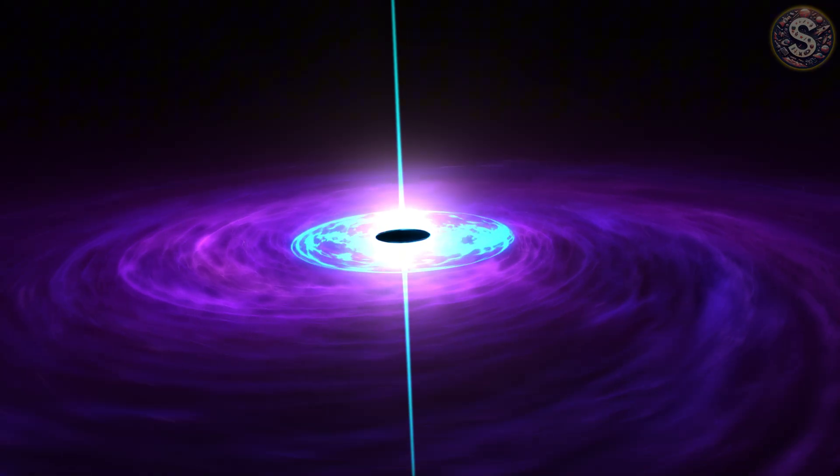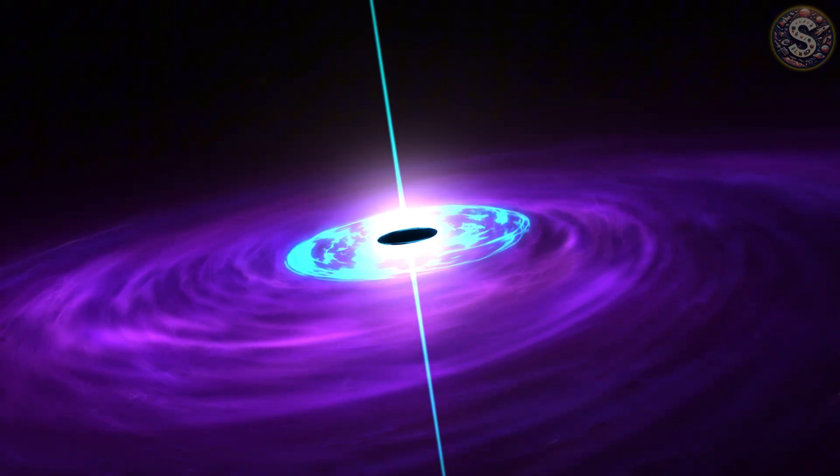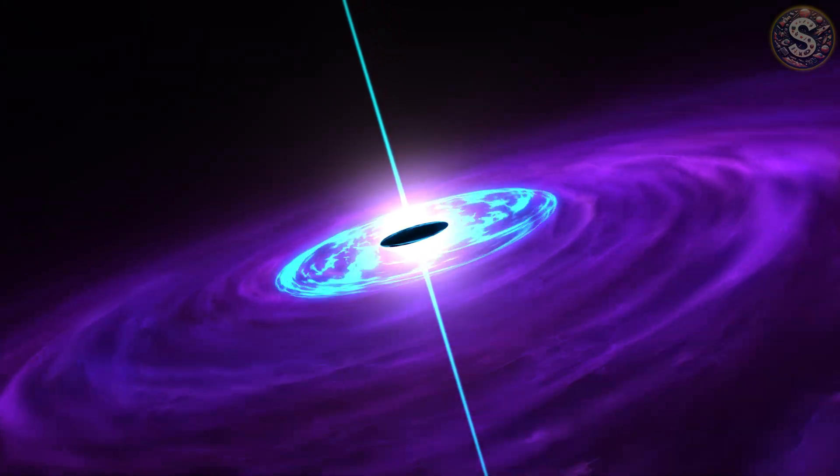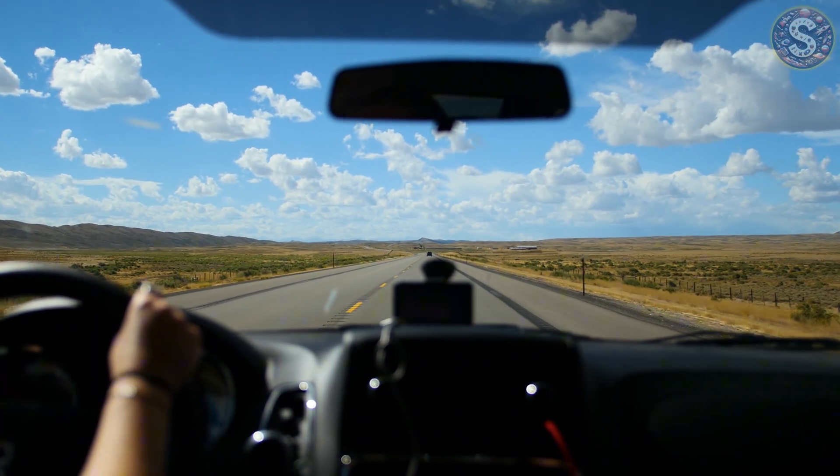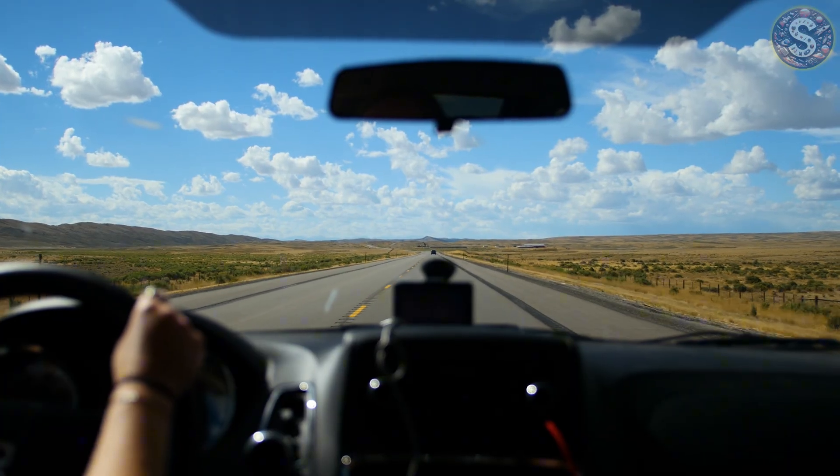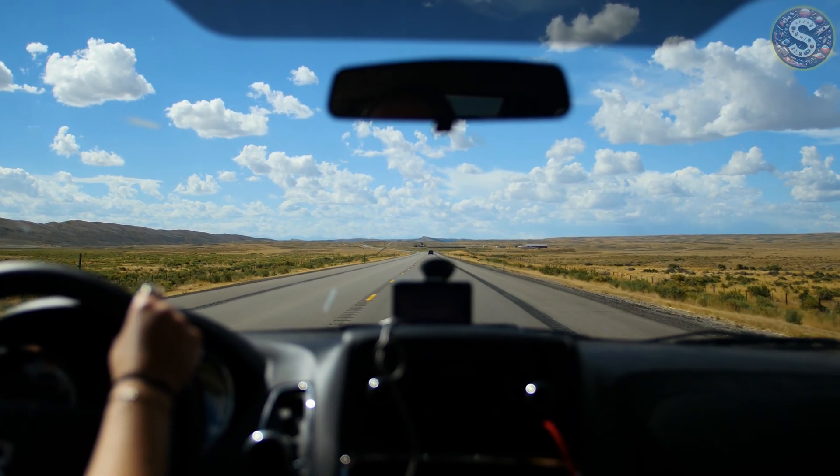Instead of dark matter holding galaxies together, maybe gravity itself changes its rules when you zoom out far enough. It's like discovering your car's steering wheel only works properly below 60 miles per hour. Everything looks fine until you hit a cosmic speed.